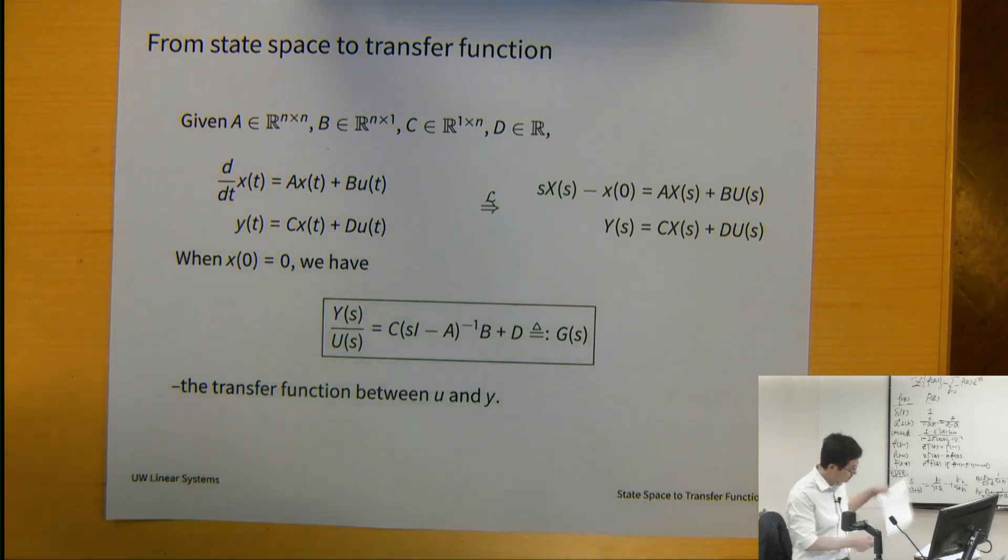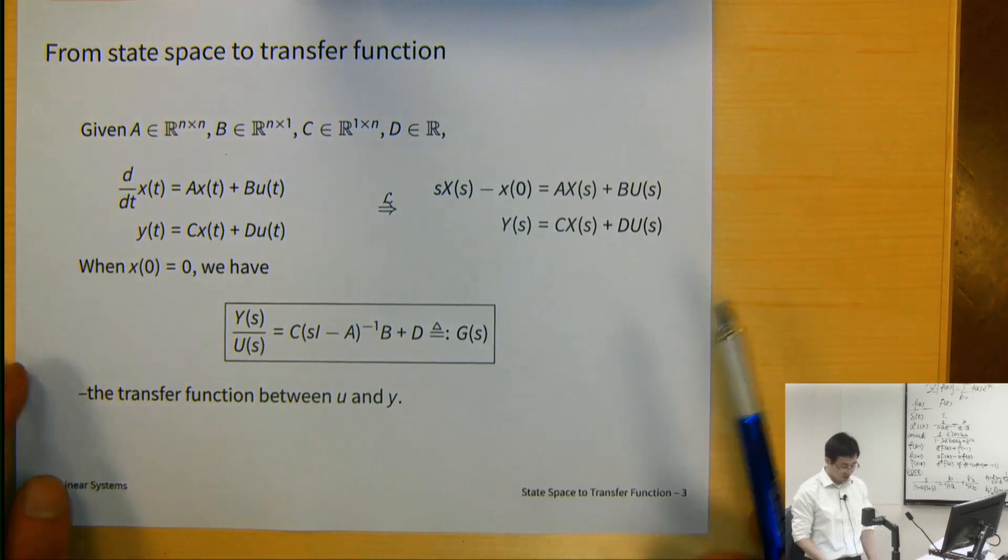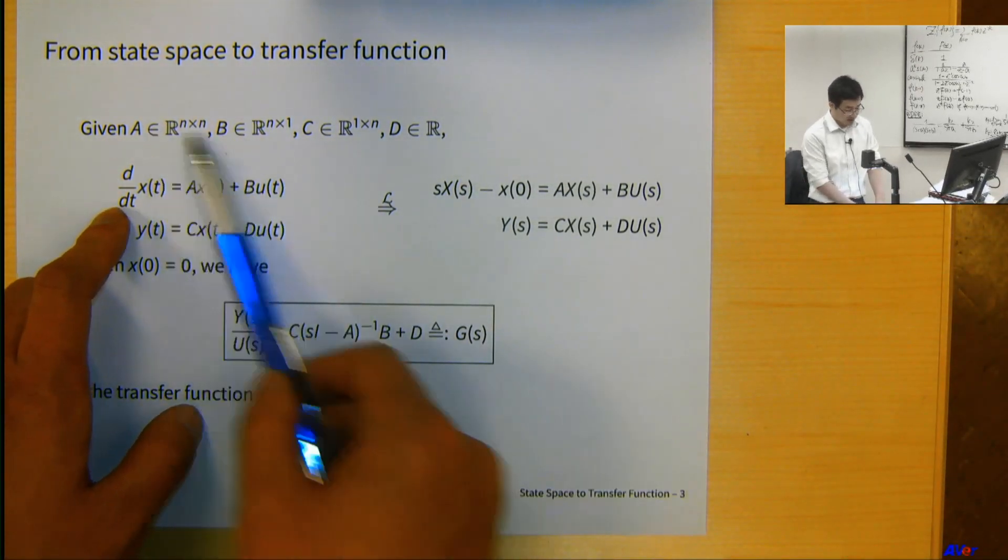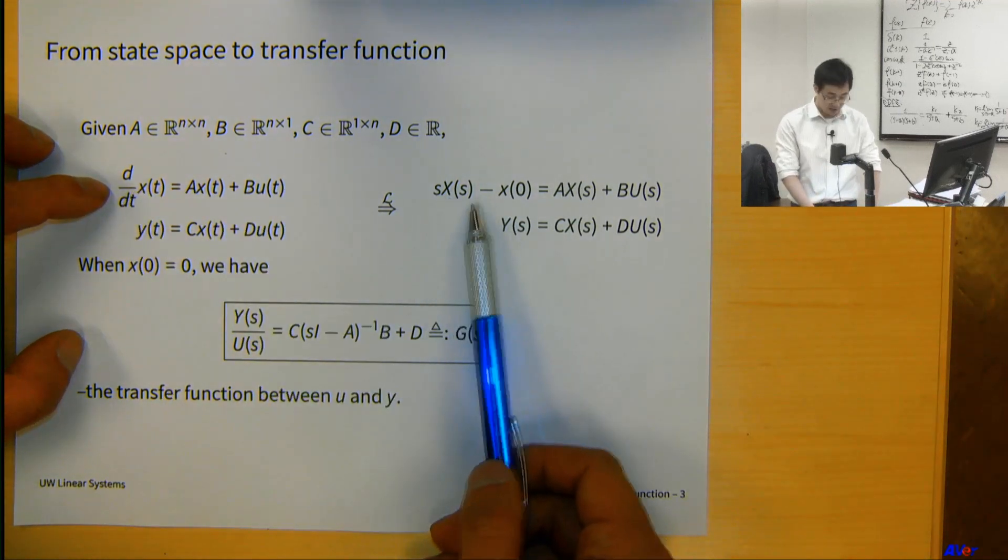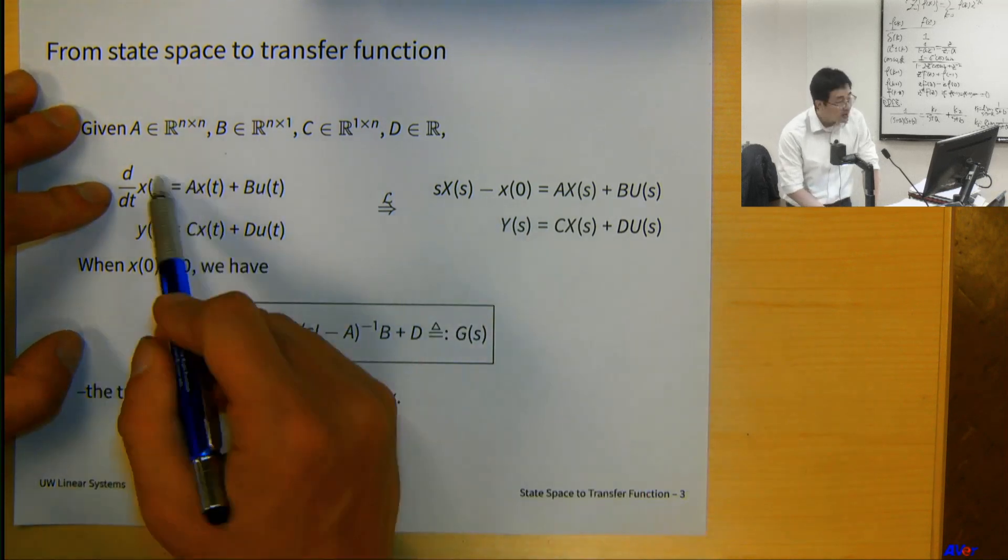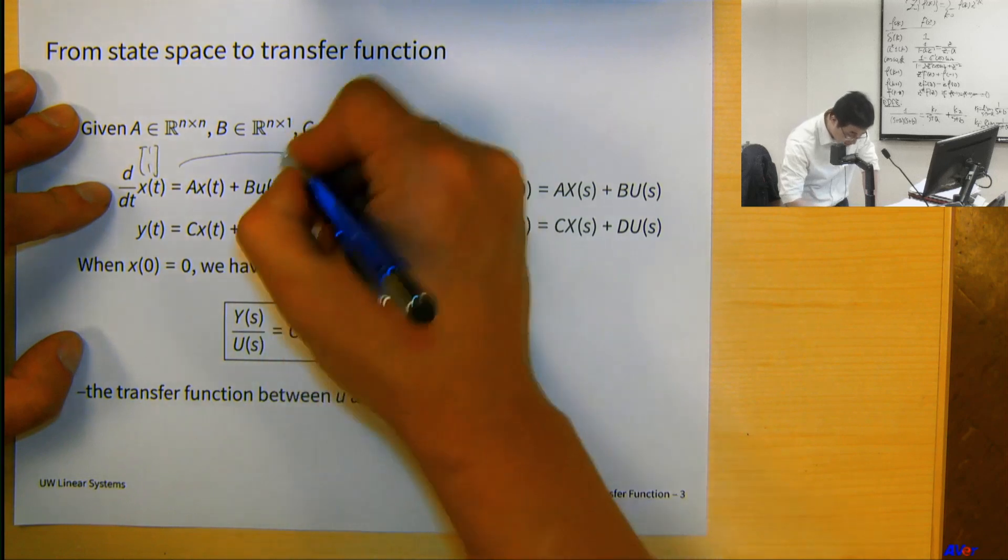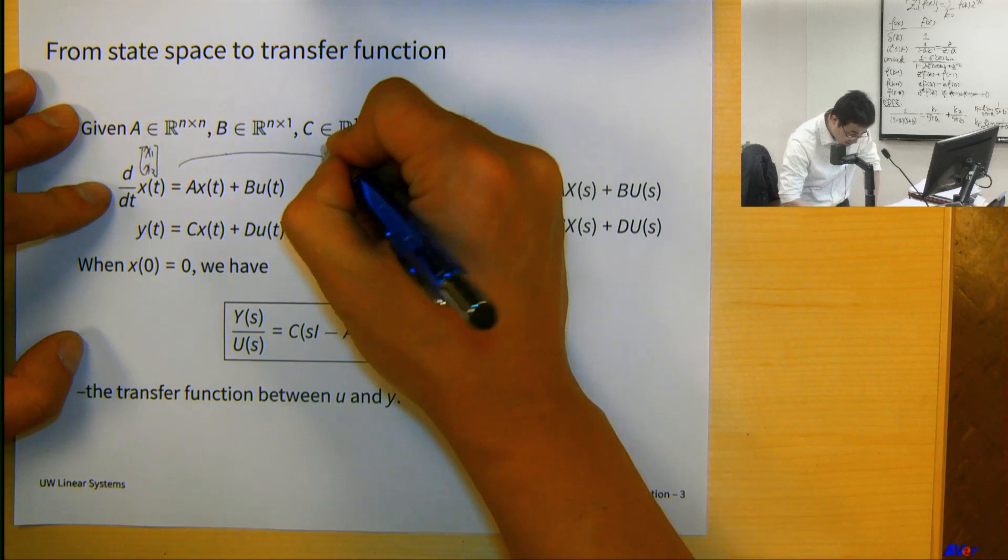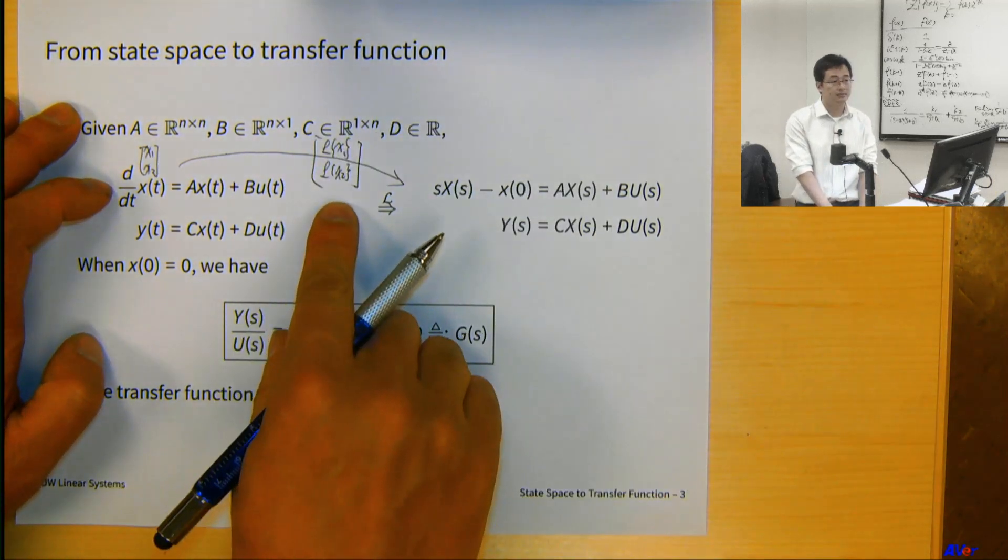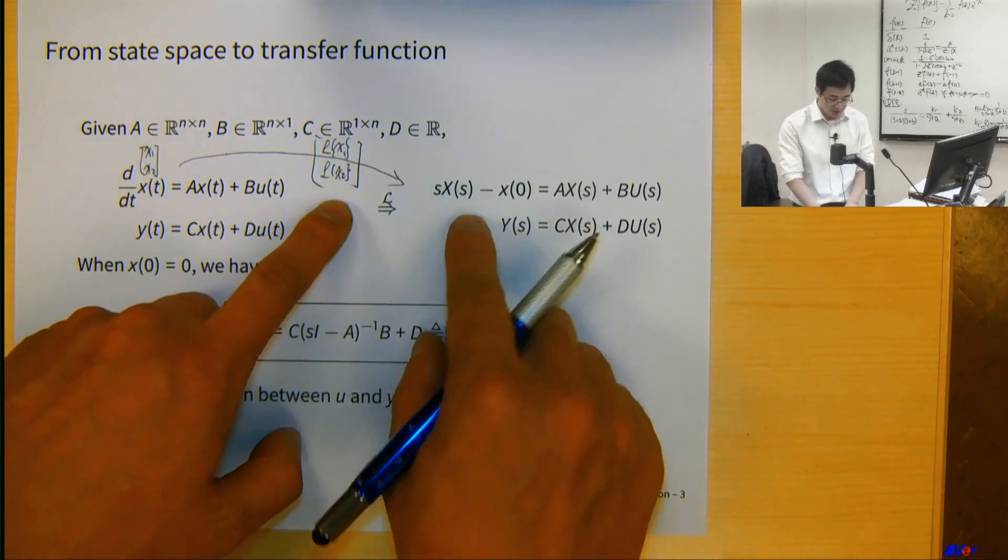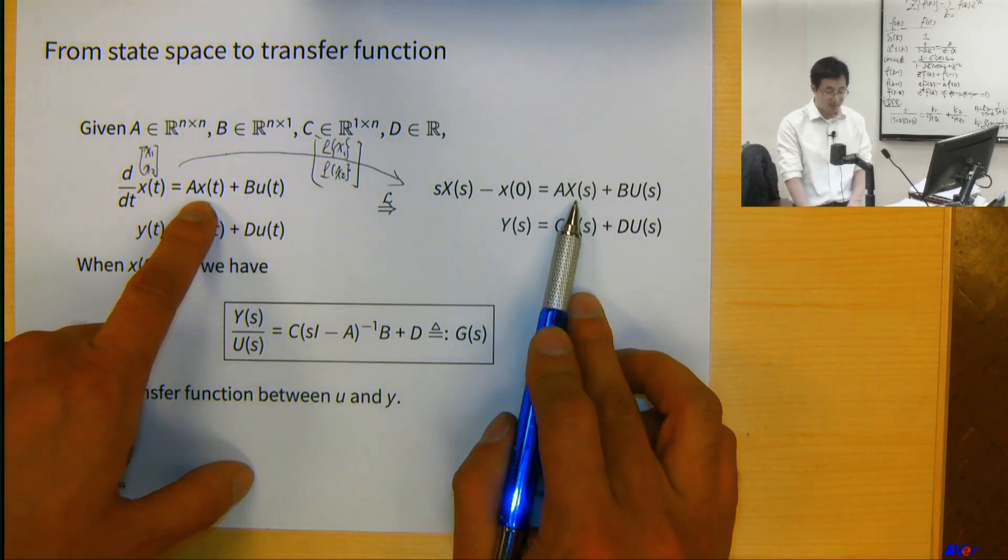If we go from the Laplace transform of the state-space formula, the language is quite straightforward. The only thing we need to pay attention to is the dimension. Laplace transform of the derivative of x is s times x of s minus the initial condition. If x is a vector, it doesn't matter. The Laplace transform of x1, x2 is still a vector. So this is sx_s minus the initial condition, and on the right-hand side is A times the Laplace transform of x plus Bu.